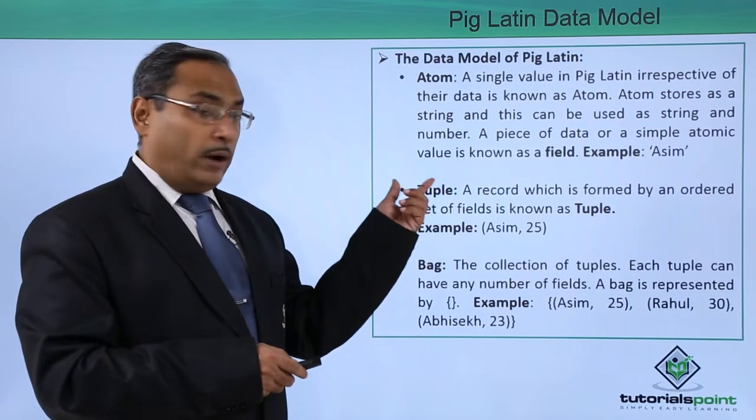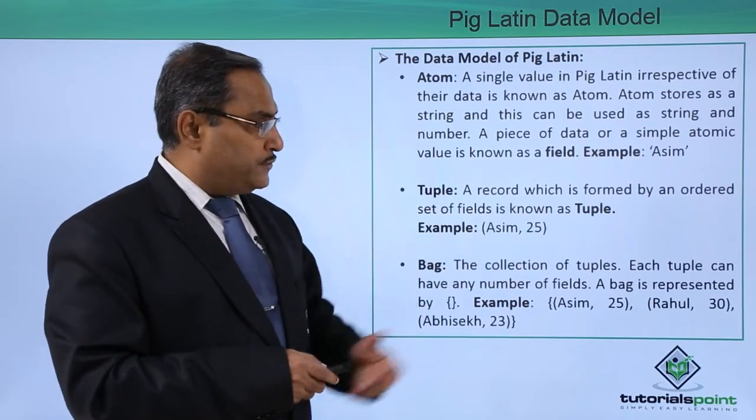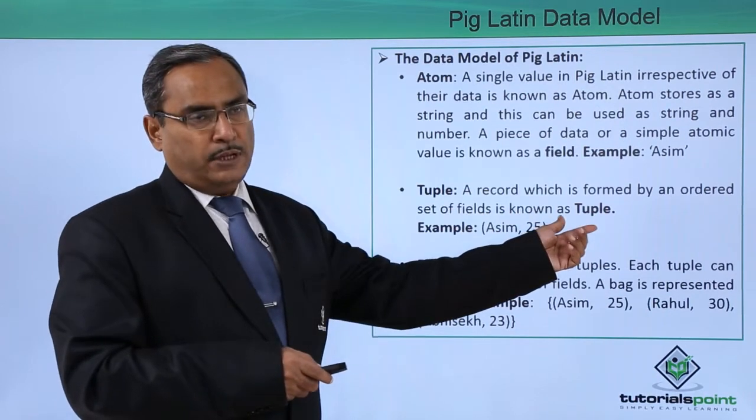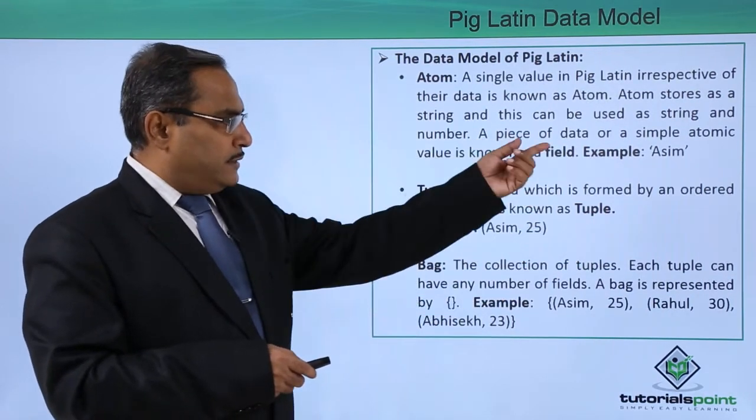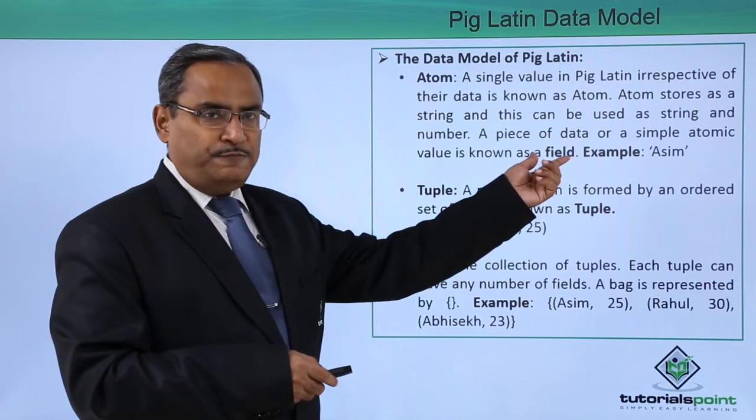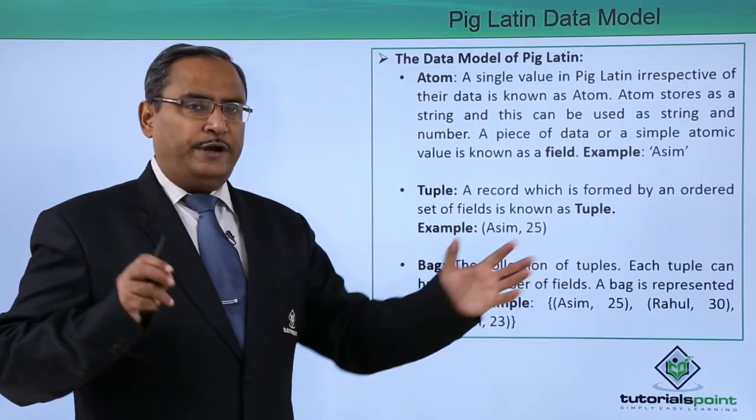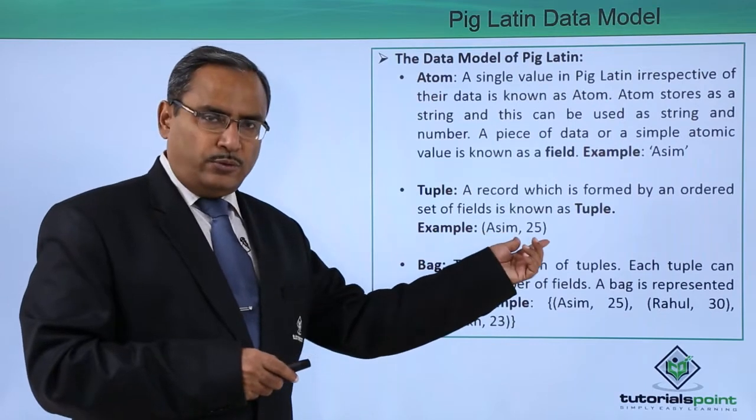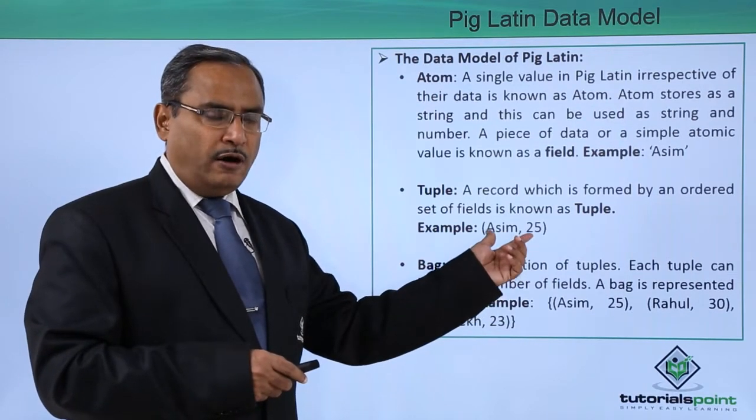Next, we are going for the tuple. What is a tuple? A record which is formed by an ordered set of fields is known as a tuple. You can find that this atomic value is also known as a field and then ordered set of fields will form one tuple. As an example, you can consider Asim comma 25 is an example of a tuple.